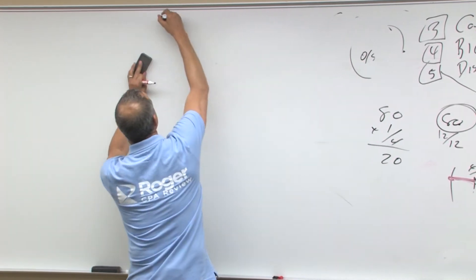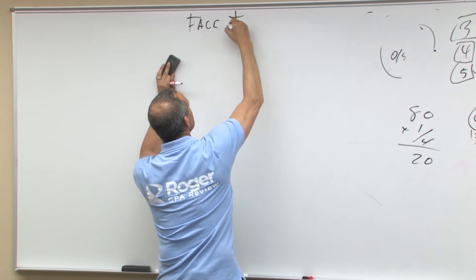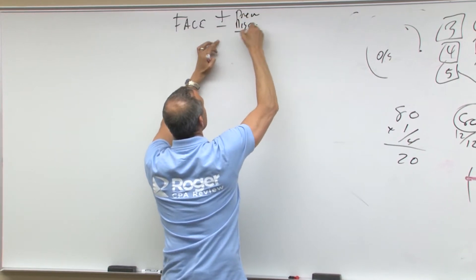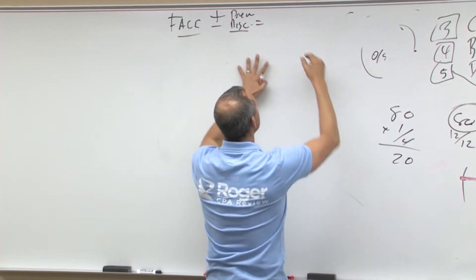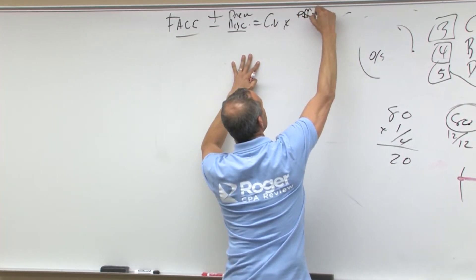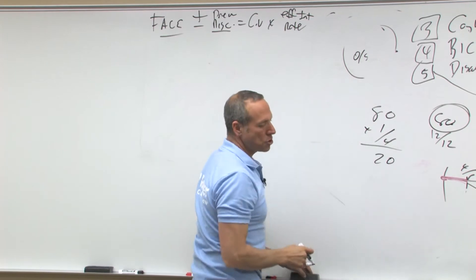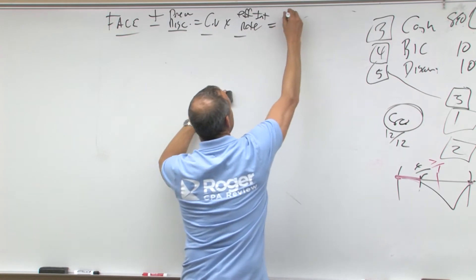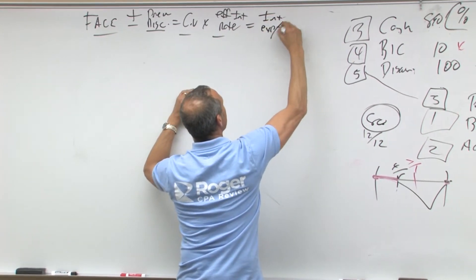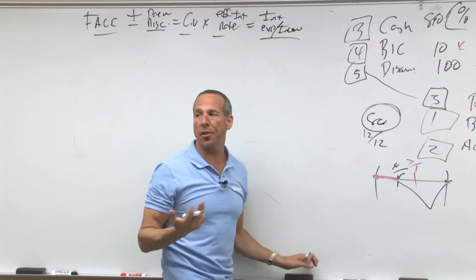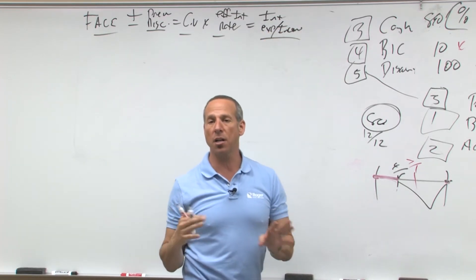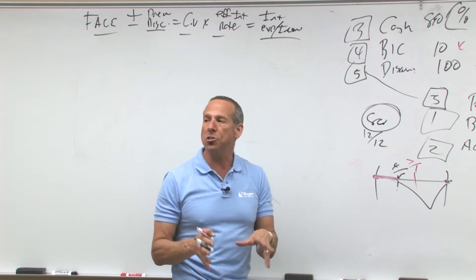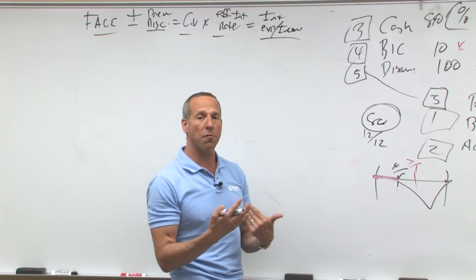We're going to set up our amortization table, which has face plus or minus our premium or discount — that equals your carrying value — times the effective interest rate. The effective interest rate is the rate that you effectively want to yield. That equals your interest expense or interest income, because one person's expense is another person's income.